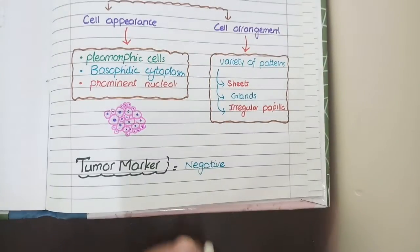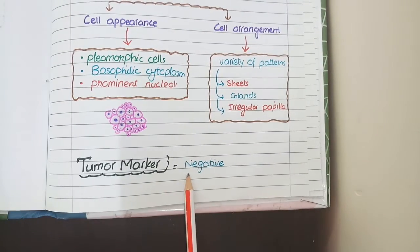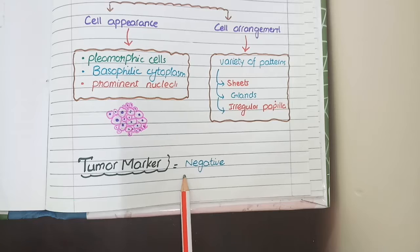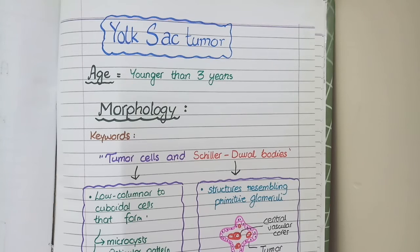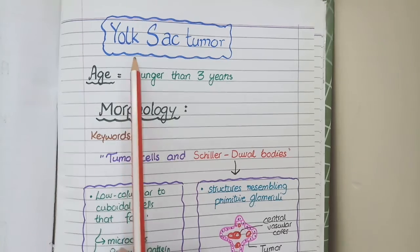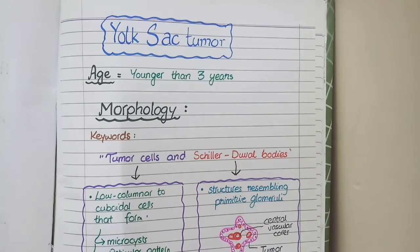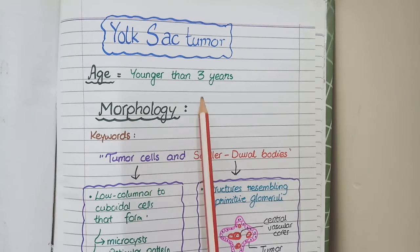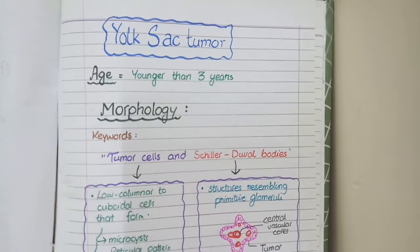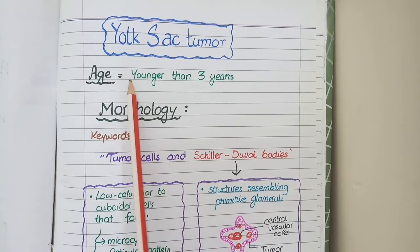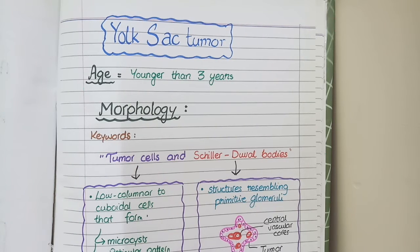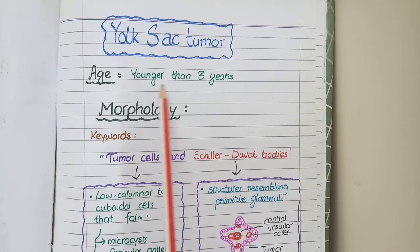The tumor marker in embryonal carcinoma is negative — there is no specific substance in blood that indicates embryonal carcinoma. The next testicular tumor is yolk sac tumors. The most striking point is that yolk sac tumors occur in babies less than 3 years of age — the youngest age group. You can memorize this as Y for yolk sac and Y for youngest age group.